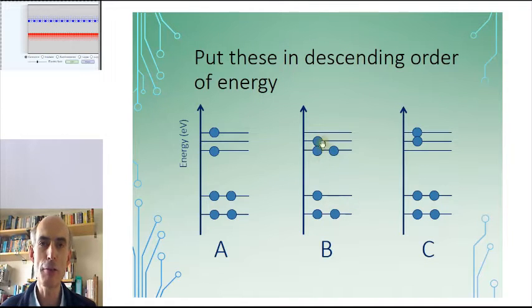So despite the fact that B has no electrons in this top orbit at all, the total energy of atom B is greater than atom C or atom A. So in descending order would be B, C, A.